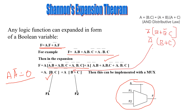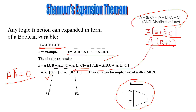Now for the Ā terms: Ā times ĀB gives ĀB. The second term, Ā times ABC̄ — since A times Ā equals 0, this term becomes 0. The third product term: Ā times ĀB̄C gives ĀB̄C. Taking Ā as common, we get Ā into (B + B̄C). By the distributive law, this can be written as Ā into (B + C).